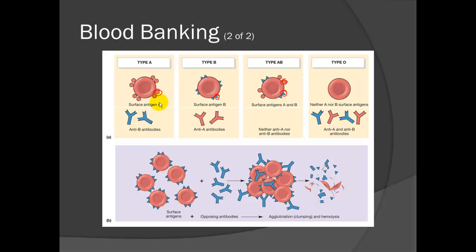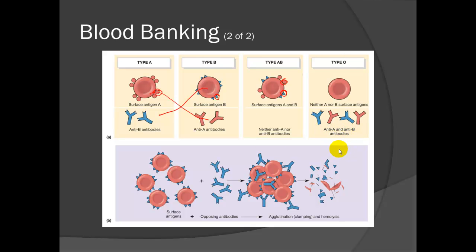Type A blood has anti-B antibodies, so if you put Type A and Type B together, they will react. Similarly, Type B blood has anti-A antibodies. Type AB has neither anti-A nor anti-B antibodies. Type O has both anti-A and anti-B antibodies.